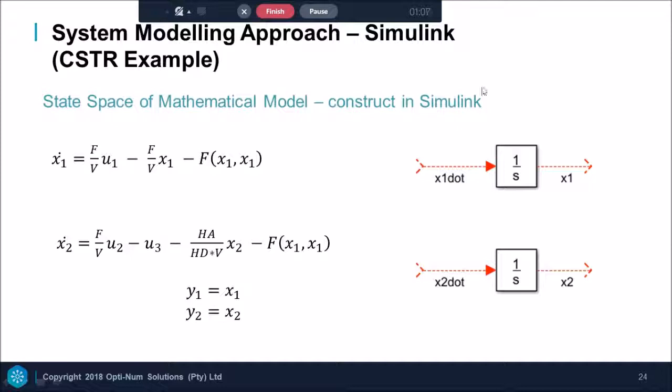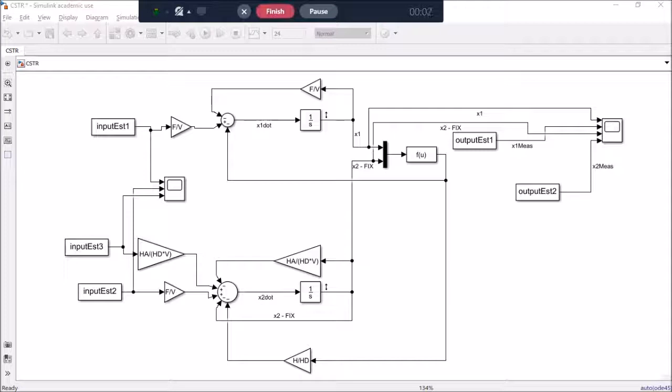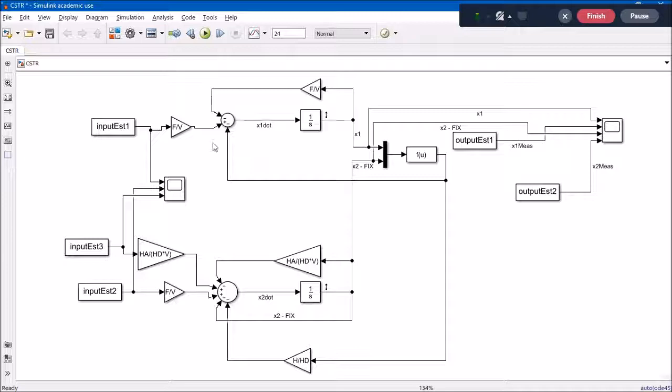The equations are written in state form so that it can easily be entered into Simulink. Now I am going to do parameterization in Simulink. I am now in our Simulink model. You can now see how our design equations are easily entered into block format. The top being the mole balance and the bottom section the energy balance of our CSTR.